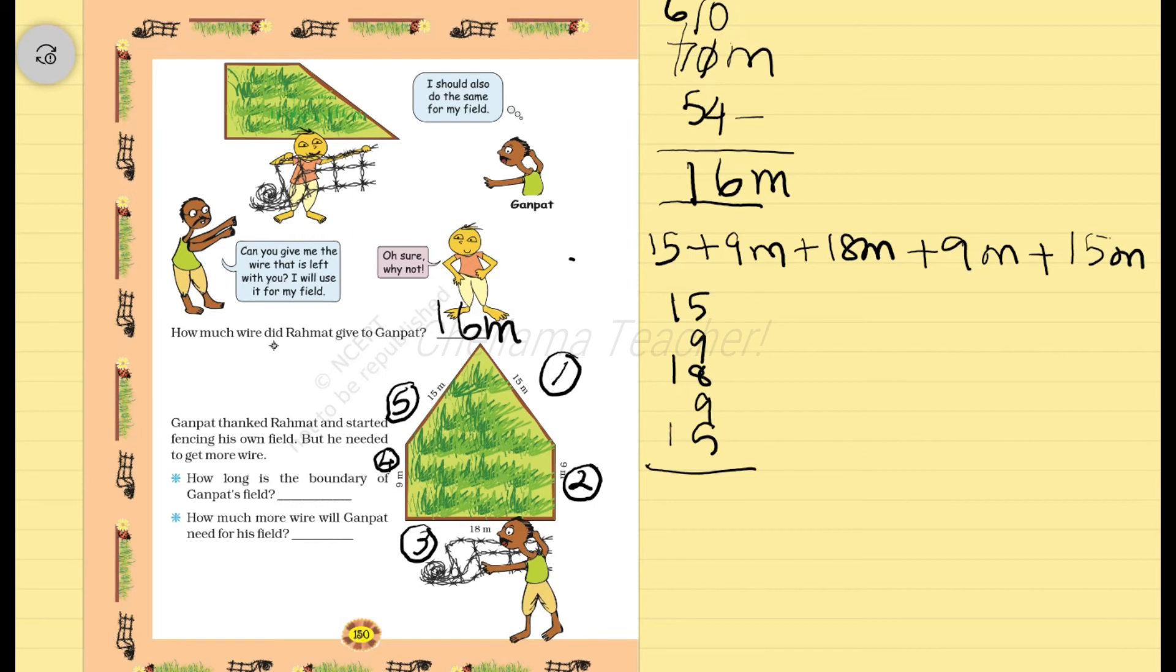Add the 1 space numbers. So 5 plus 9 is 14. 14 plus 8 is 22. 22 plus 9 is 31. 31 plus 5 is 36. So carryover is 3. 3 plus 1 is 4. 4 plus 1 is 5. 5 plus 1 is 6. 66. So how long is the boundary of Ganpag's field? 66 meter. Correct.